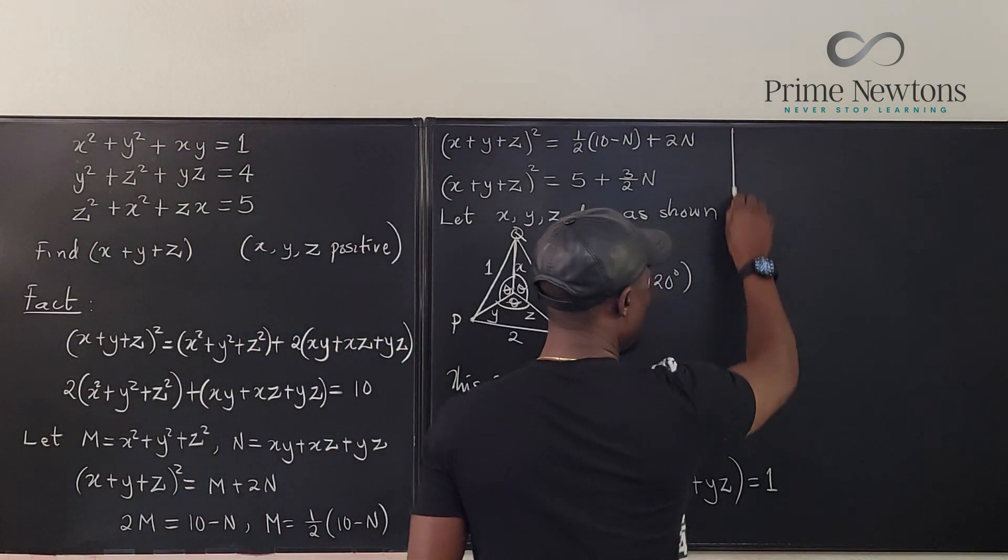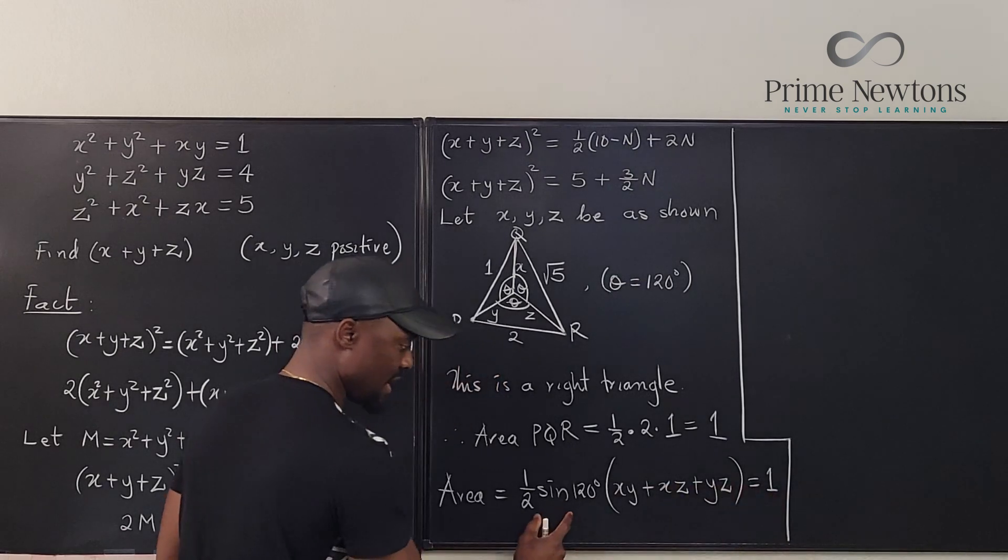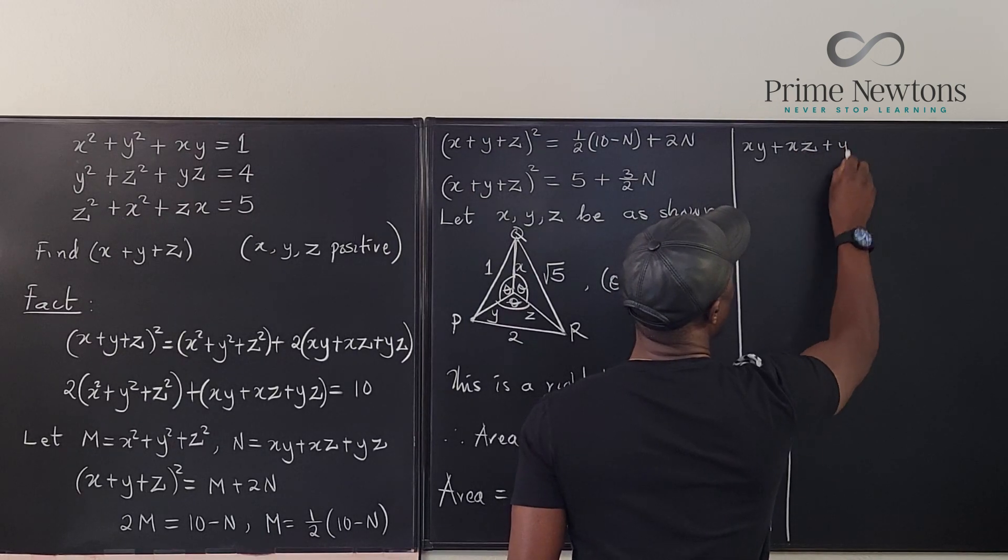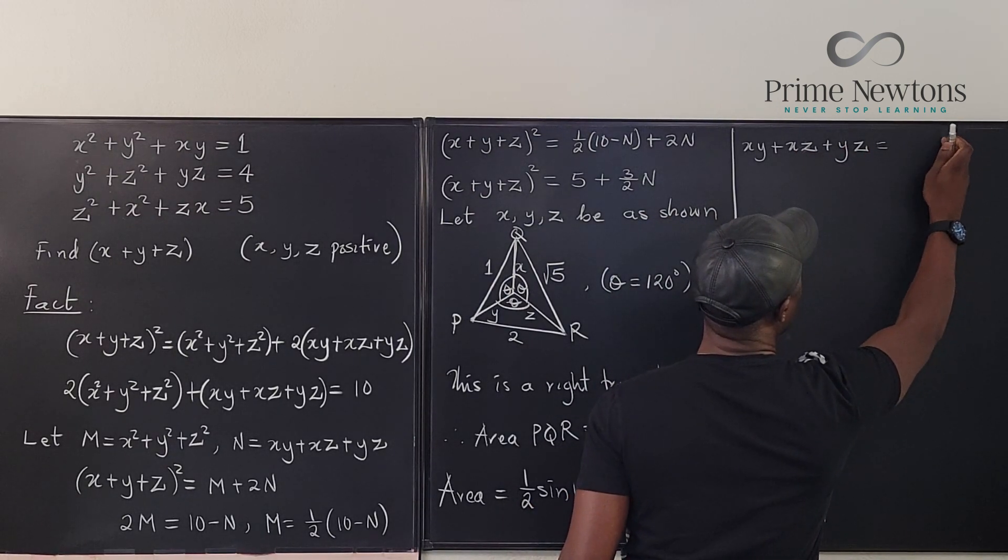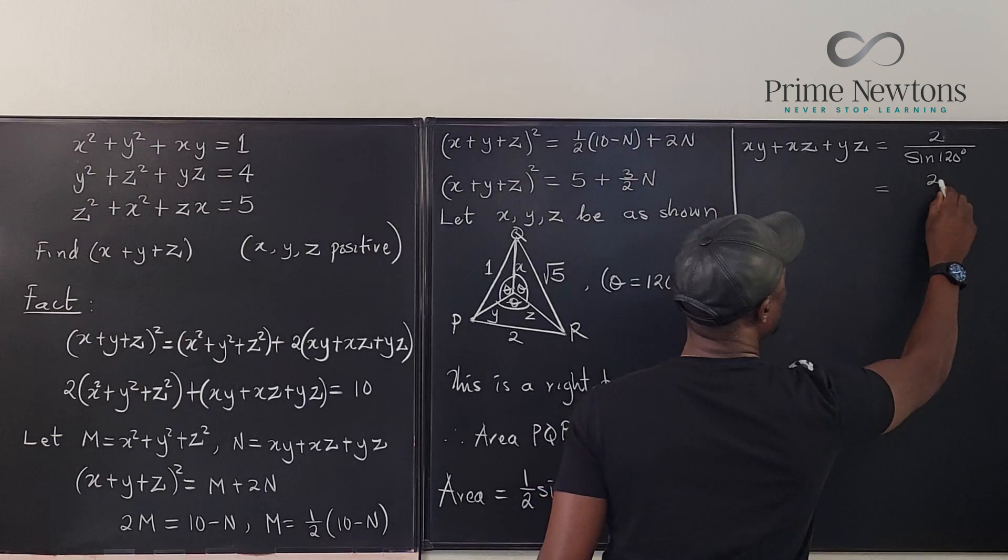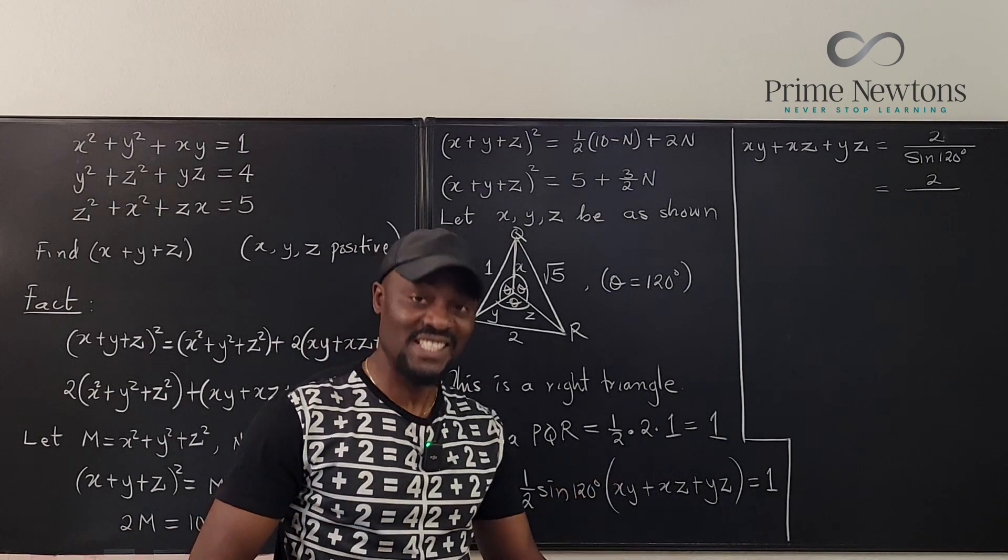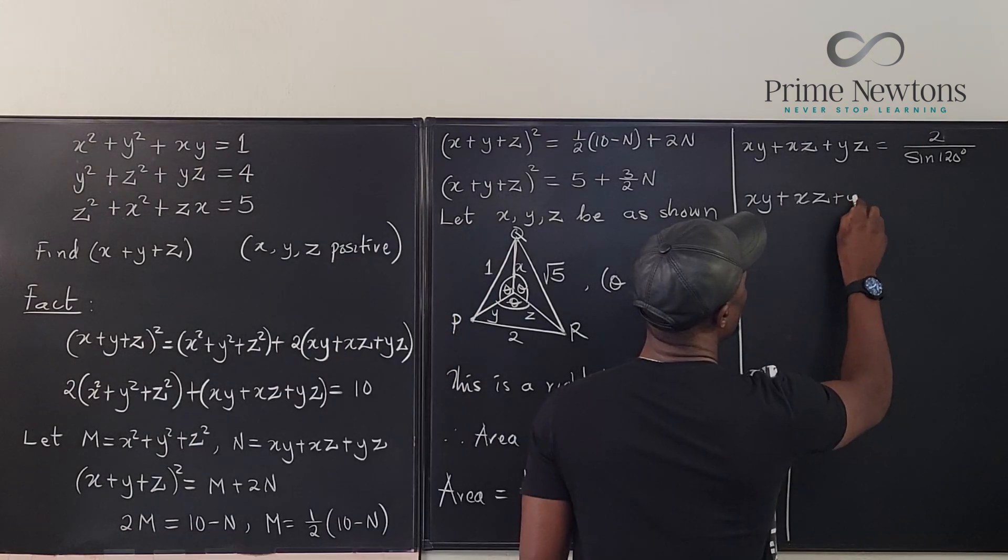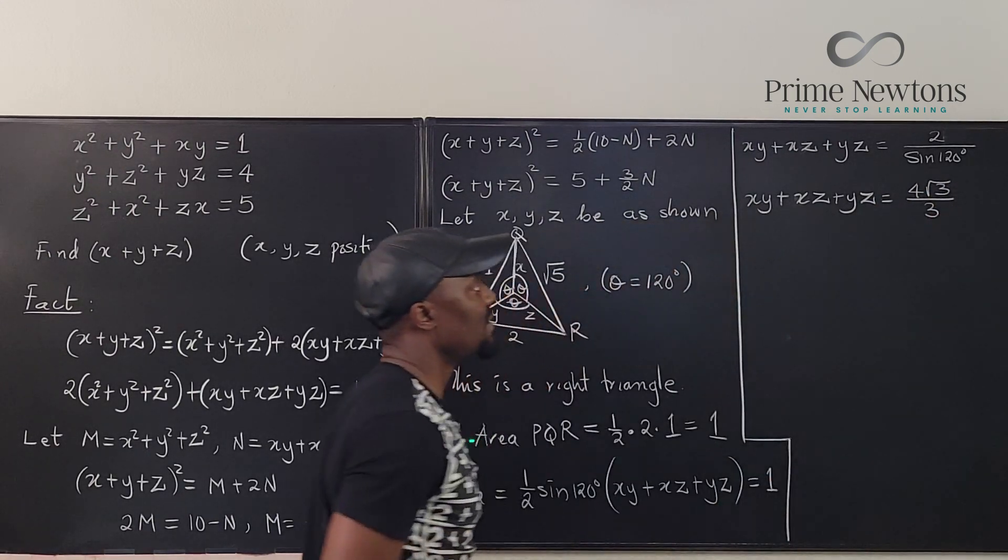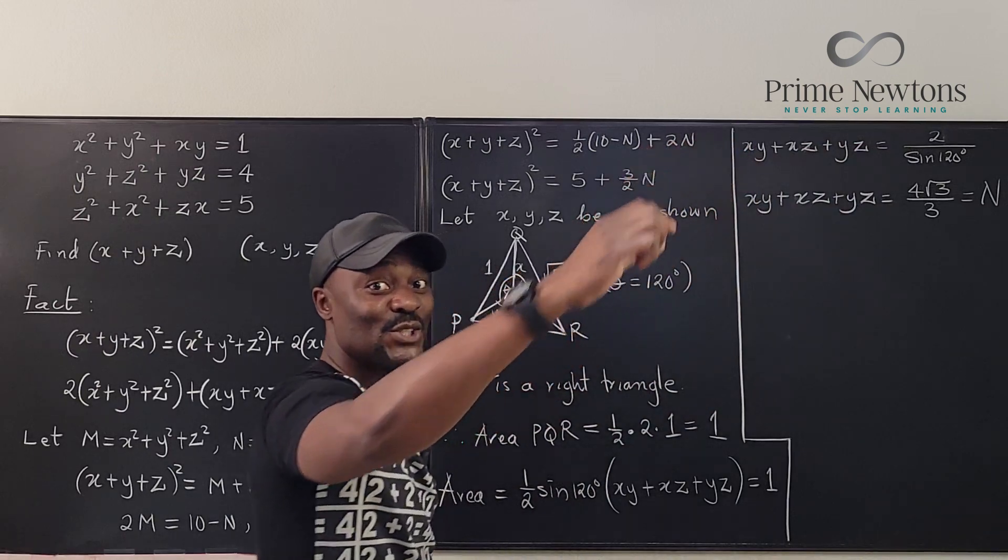And that's the key. So the sum of the individual areas is equal to one. And from there I can find what this is. So now I know that XY plus XZ plus YZ is equal to two over sine 120 degrees. That's going to be equal to two over... what is sine 120 degrees? It's the same thing as sine 60. Which is going to be root 3 over 2, so that equals 4 root 3 over 3. And that's it. And that's our N, remember? That's what we named N. So we're done.